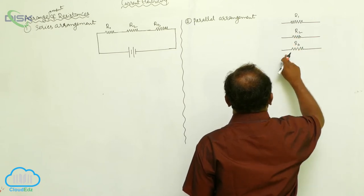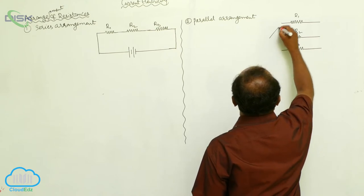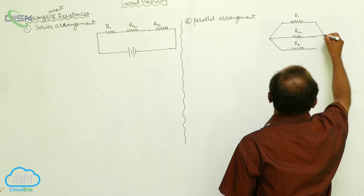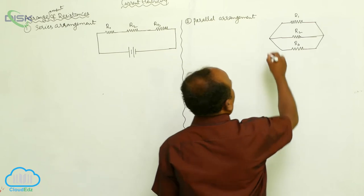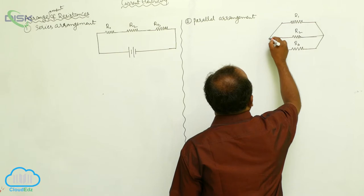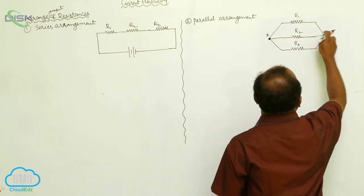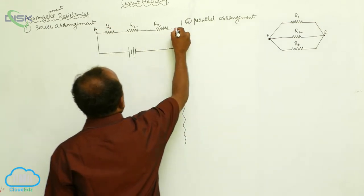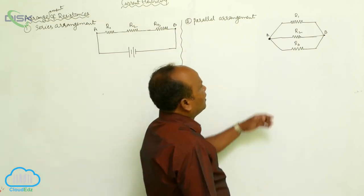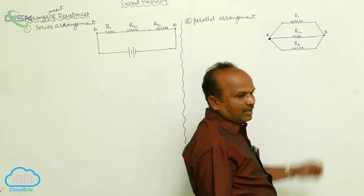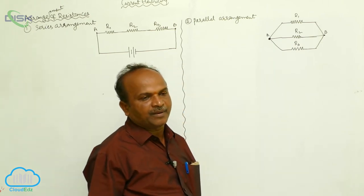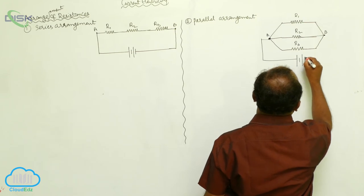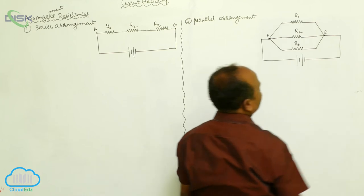In the parallel arrangement, all the first terminals of the resistances are connected to a common point A, and all the second terminals are connected to another common point B. Finally, the circuit is closed with the battery. Such an arrangement — where two or more resistances have all first terminals at one common point and all second terminals at another common point — is known as the parallel arrangement of resistances.